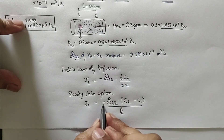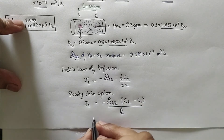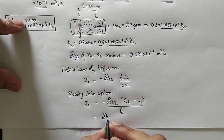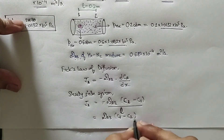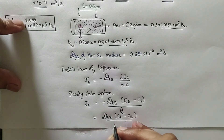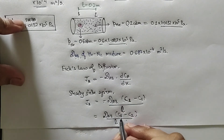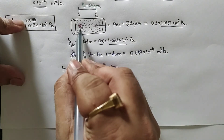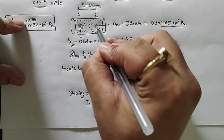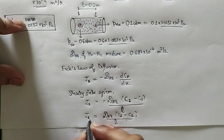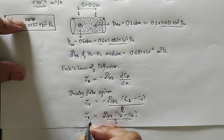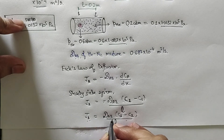Taking the negative sign inside, the steady-state flux equation becomes: J_A = D_AB × (C₁ − C₂) / L, where the high concentration exists at point one and low concentration at point two. Here, component A is helium, which is diffusing into component B, that is nitrogen.